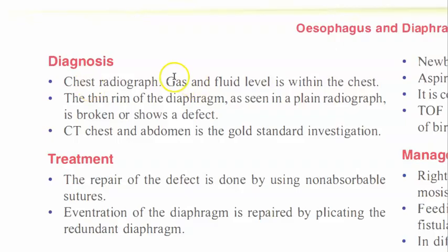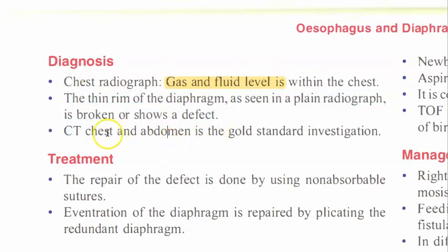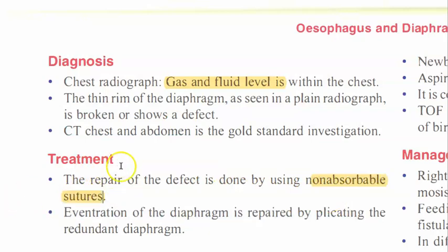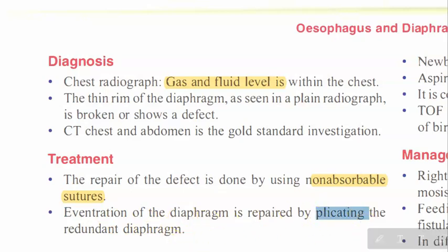For diagnosis, an X-ray showing gas-fluid levels or a broken thin rim of diaphragm suggests a defect. CT can serve as the gold standard. For repair, non-absorbable sutures are used to close the defect after pushing contents back. In the case of eventration, since there is no defect, you plicate the redundant diaphragm.